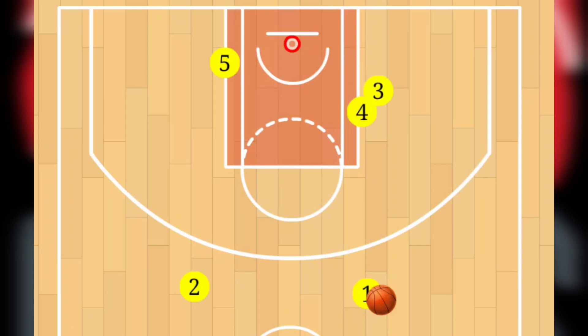Now let's take a look at how the play is run. Just to go back — I failed to mention how we start. We do have a stack position down low on the block. That's going to be your four and your three. On the opposite block you're going to have Player 5. Players two and one are at the top. So remember, you're going to start in the stack, and Player 5 will be on the opposite block.